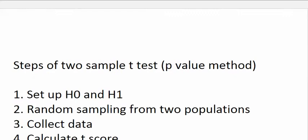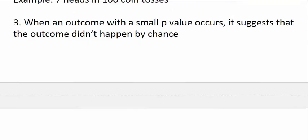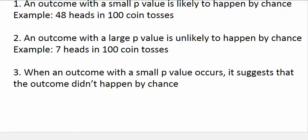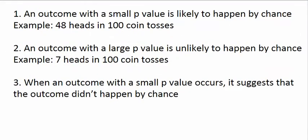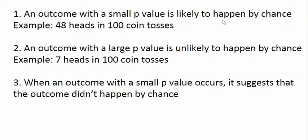So when the p-value comes out to a high number, your observed outcome is likely to happen by chance and you're not confident that anything else is going on. If the p-value comes out to a low number, you have an outcome that's not likely to happen by chance and you're confident that something else is happening. This slide gives an example: 48 heads out of 100 would have a small p-value, while 7 heads out of 100 would have a large p-value.